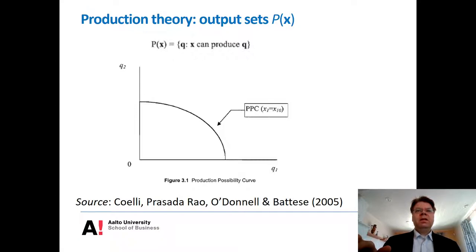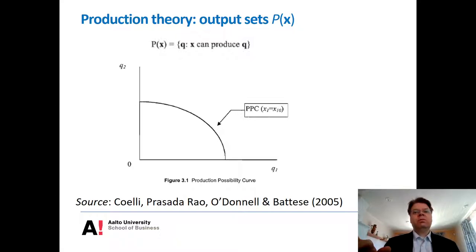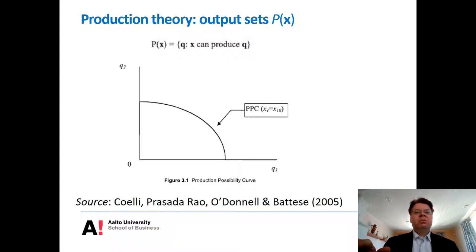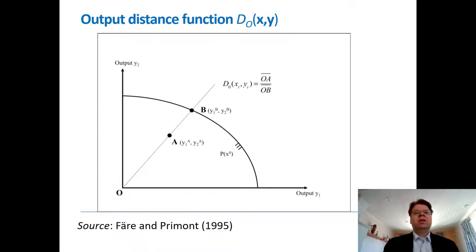In this setting we have a mapping from a vector of inputs to a set of outputs, but to estimate something like this it is very convenient to have a functional representation of this multiple-output technology. We found that the single output production function is not able to do that job, so we need a more general setting.